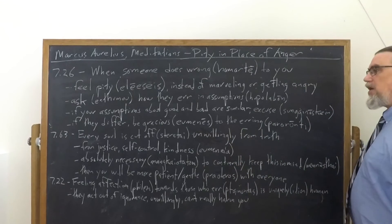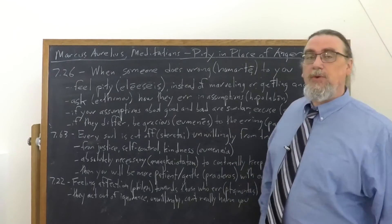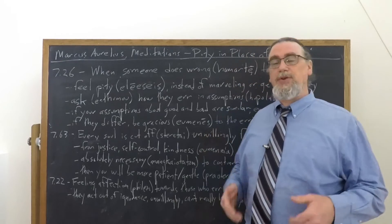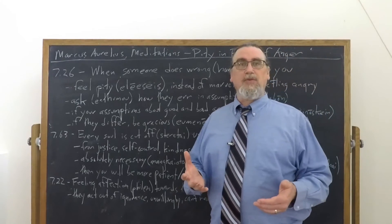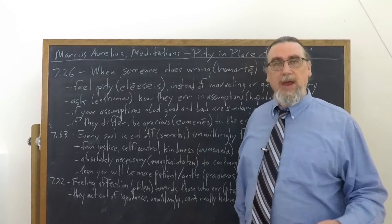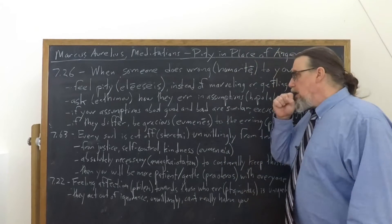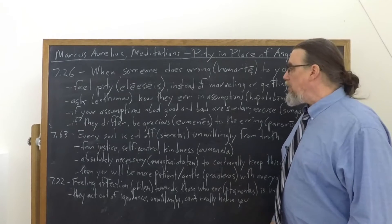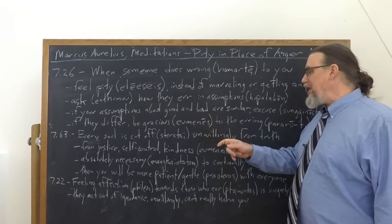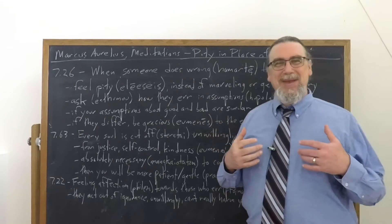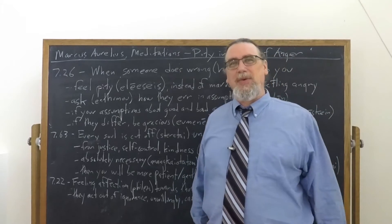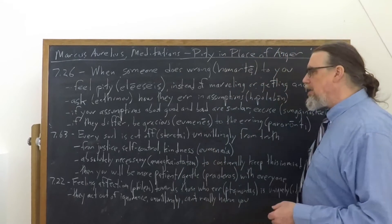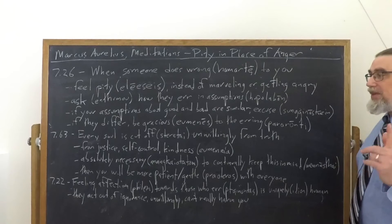They think it's good for them to not study or practice or anything like that. And so they wind up being cut off from truth and not just from truth, also from these virtues like justice or self-control, sofrosune, which we can translate as temperance, and also from kindness, eumeneia. And we see this same term, Eumenes, eumeneia, being kind, being gentle with other people.